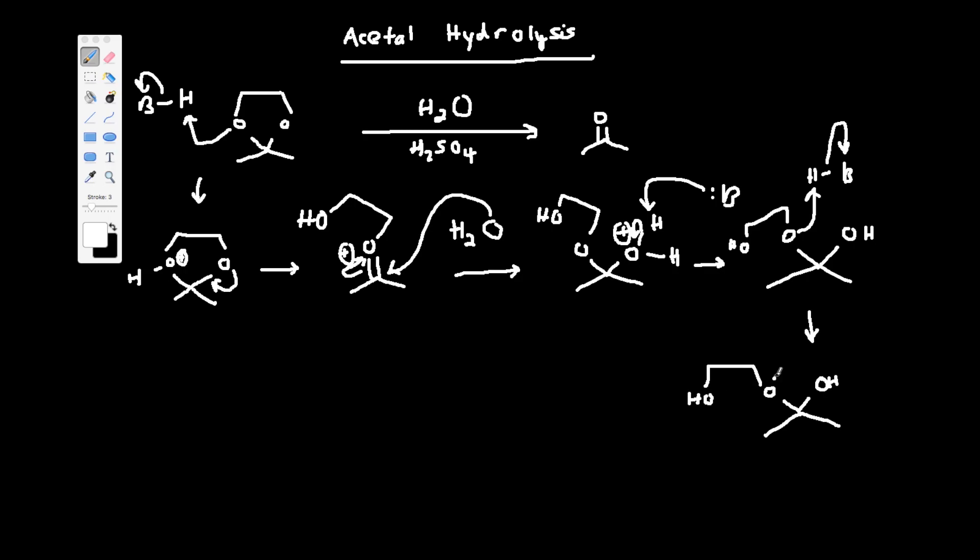So now this is going to be the leaving group. We do the assisted ionization SN1 type reaction, except it's not exactly SN1 because nothing is coming in after that. But it is the assisted ionization. It's different than when the first leaving group leaves because there's no nucleophile.